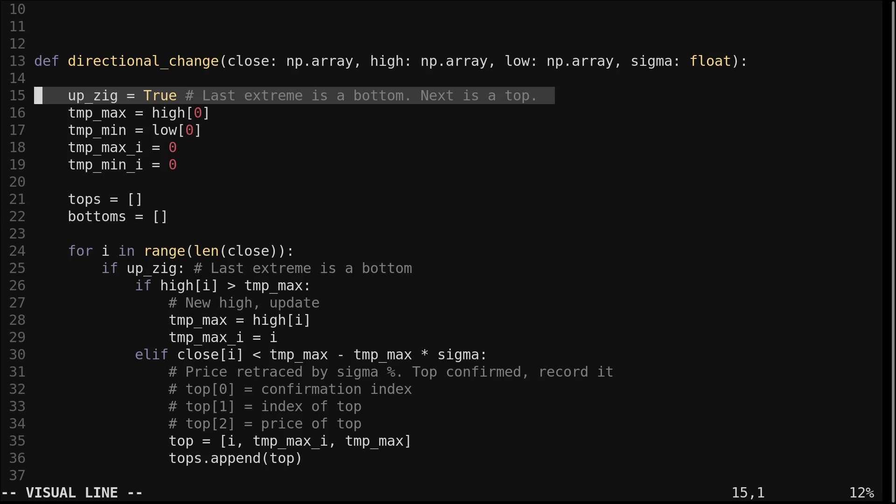We arbitrarily initialize it as true. We have to initialize it as something. This may cause the results to be slightly inaccurate at the very beginning of the data. We keep track of the current index and price of the pending top or bottom in these variables. These values correspond to the orange candle we saw in the visualization.